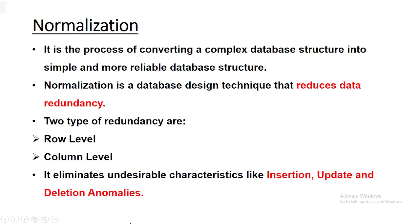Suppose if any table is not properly normalized, we will have lots of data redundancy. This will not only eat up extra memory space or physical storage, but will also make it difficult to handle and update the database. There are two types of redundancies: row-level redundancy and column-level redundancy.